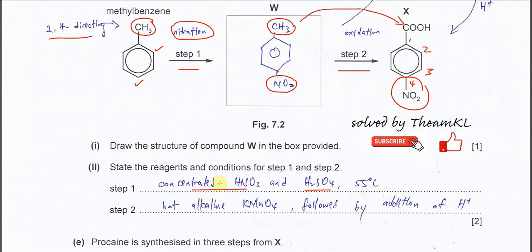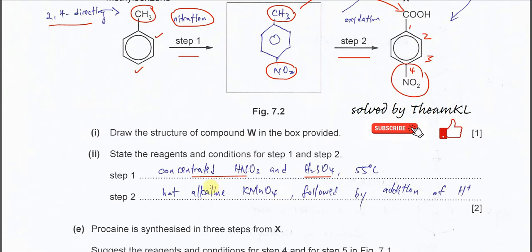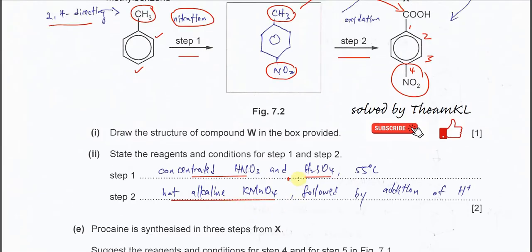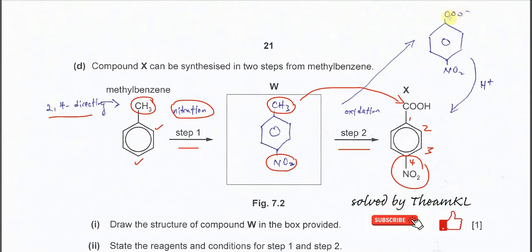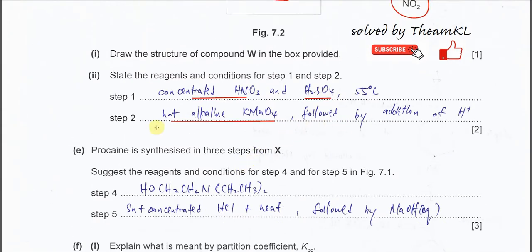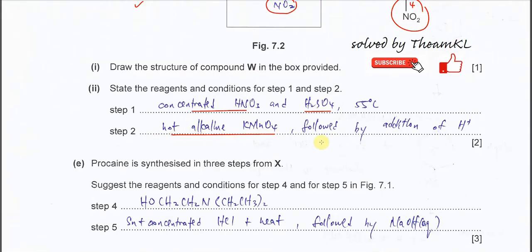For step 2 — the oxidation of the alkyl benzene (methylbenzene) — we first use hot alkaline KMnO₄. This forms the carboxylate anion. After that, you need to acidify it: add acid so the carboxylate forms the carboxylic acid (COOH). So step 2 involves two sub-steps: hot alkaline KMnO₄ followed by an acid solution.